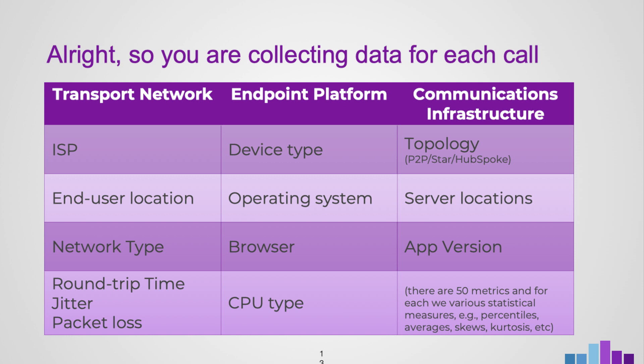We categorize data into three parts: transport, device, platform, and infrastructure. On the network side you have ISPs, end user locations, and network types like WiFi or 3G. Then you have media metrics like round trip time, jitter, packet loss, frame rate, and frame size for the media and audio pipeline. On the endpoint side you have devices, operating systems, browsers, and CPU types — so you can see if a certain type of device, like a low-cost Android phone, is the problem. And there are topologies like peer-to-peer or star hub-spoke. We have about 500 metrics, which turns out to be thousands of data points.